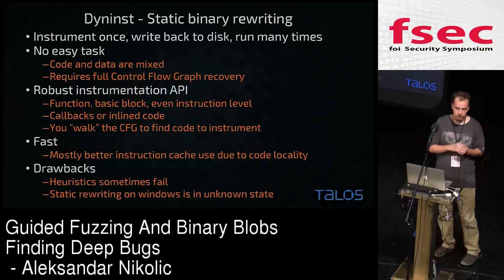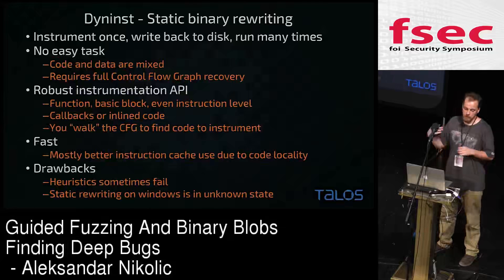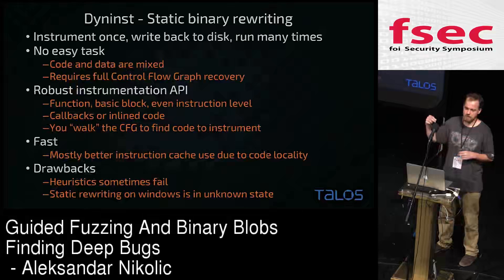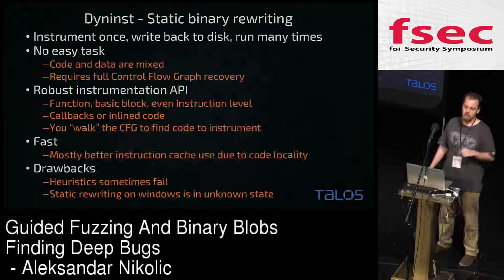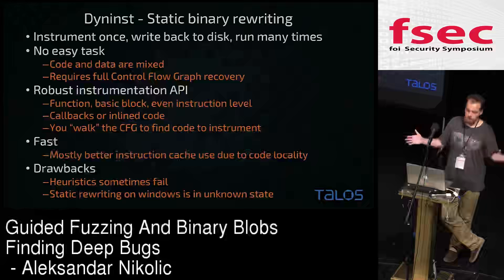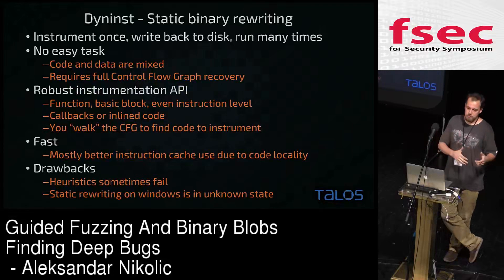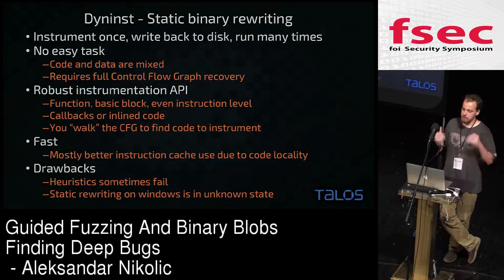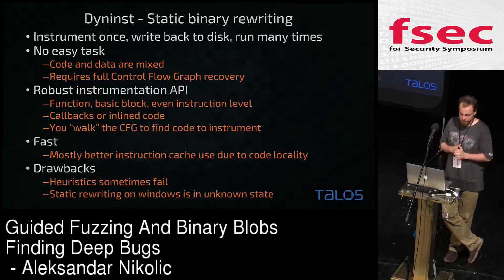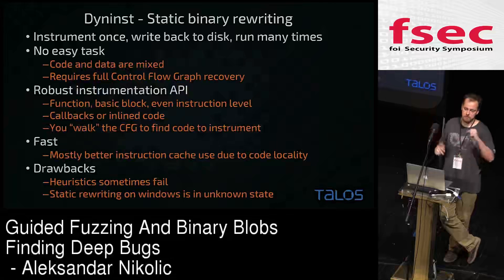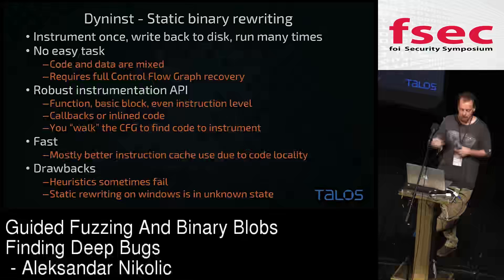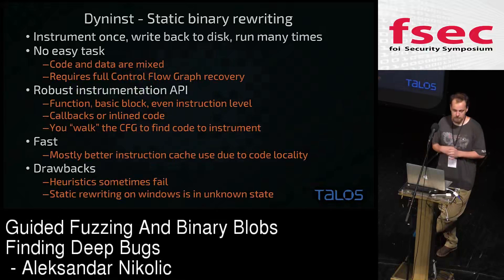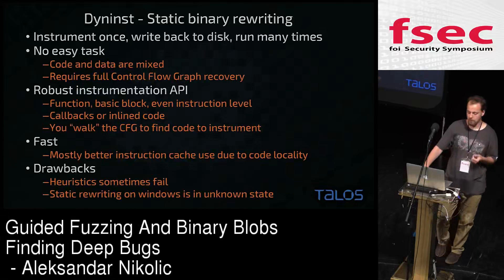What DynInst does really well is that it has a robust instrumentation API which is simple to use and allows great granularity. You can hook functions, do basic-block-level instrumentation, or even instruction-level instrumentation — full freedom of what you want to do. To instrument a binary, the idea is to read the binary, build a control flow graph, walk that graph, find the code you want, add instrumentation in the places you want, and write it back to disk. Execution is faster mostly because we still get to use the instruction cache, which doesn't get evicted each time we branch to instrumented code.